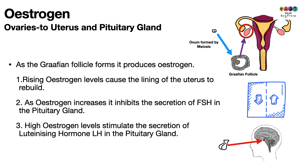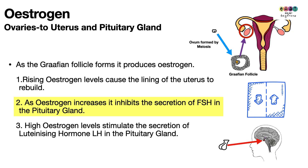Next is estrogen. As the Graafian follicle forms, it produces more and more estrogen. The rising levels of estrogen cause the lining of the uterus — the endometrium — to rebuild. As estrogen levels get higher and higher, it inhibits — it blocks — the secretion of Follicle Stimulating Hormone in the pituitary gland. That is really important.